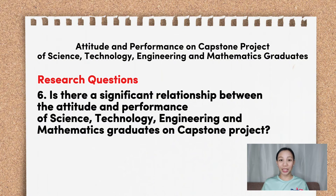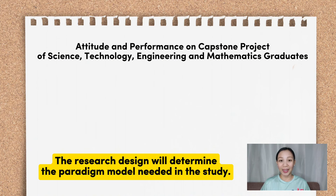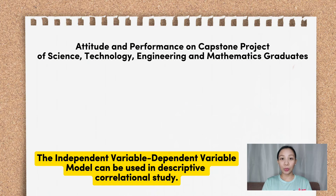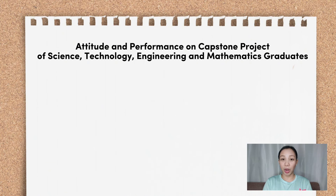Now that we have already formulated the research questions, crafting your paradigm of the study will be easy. Trust me, researchers — it's going to be easy, as long as you know your research design and you have already formulated the research questions. Since this is a descriptive correlational research, we will use the IBDV model, or the independent variable–dependent variable model. This is one of the types of the paradigm of the study or research paradigm. For the other research paradigm models, I will discuss them in upcoming videos.